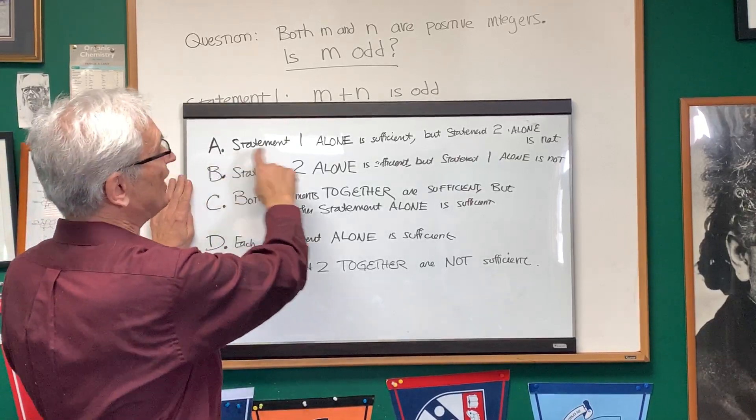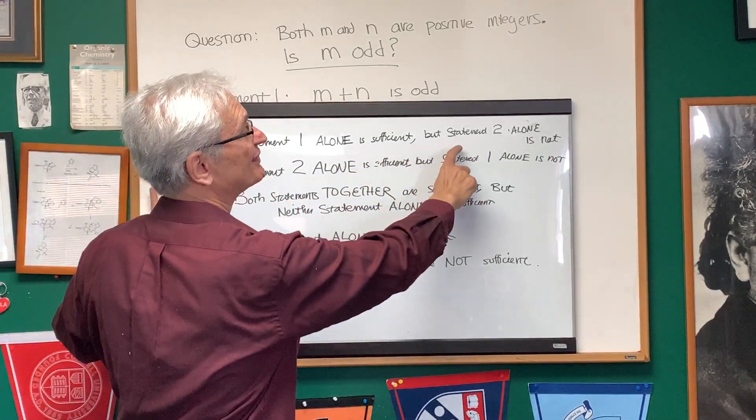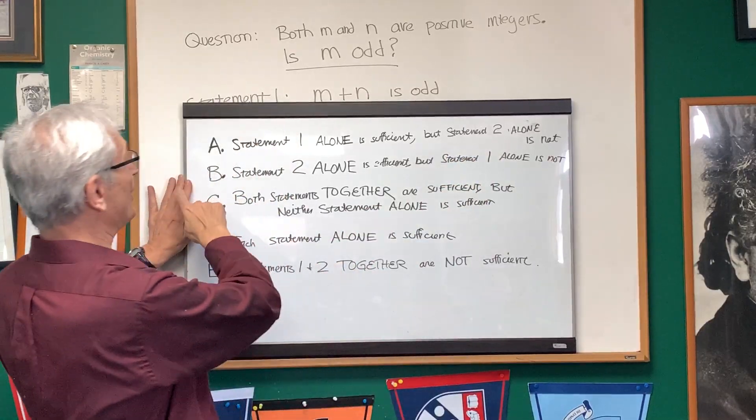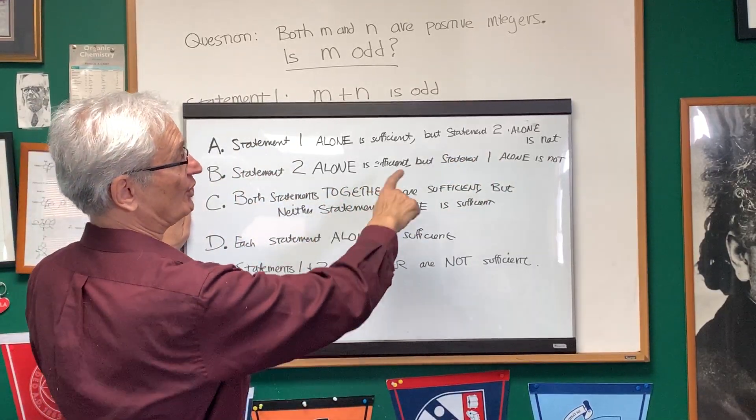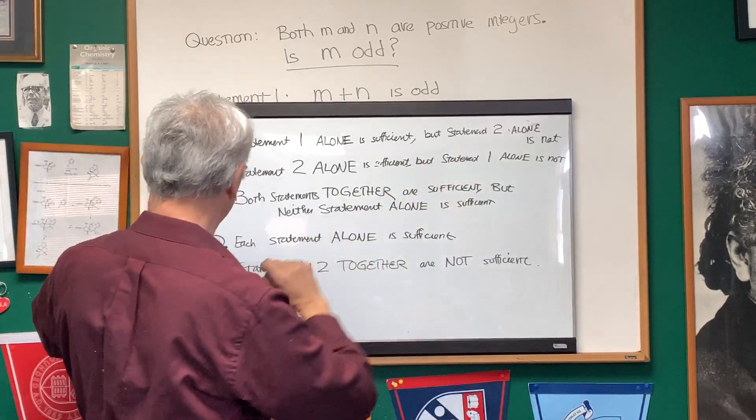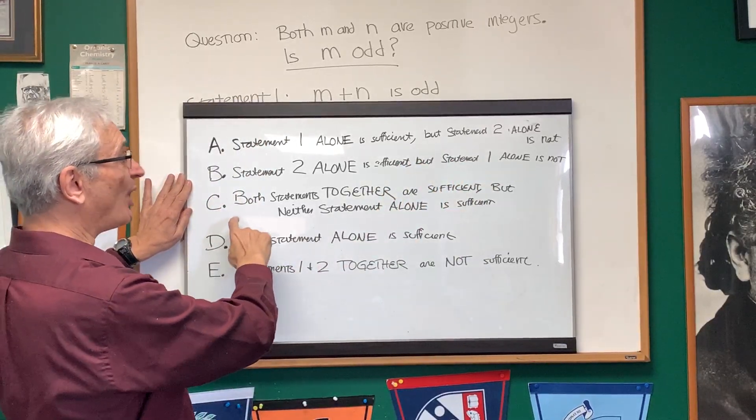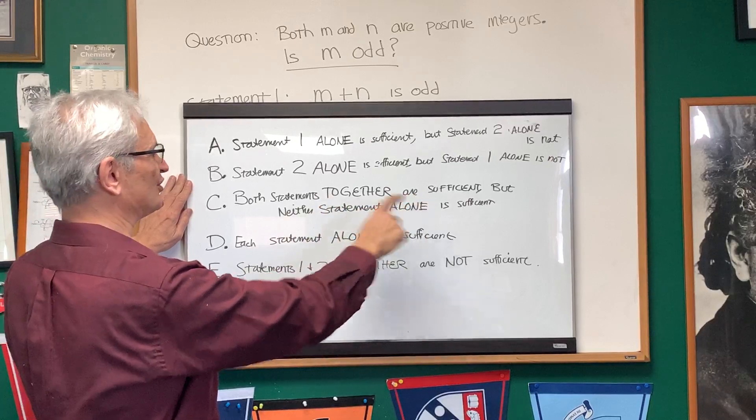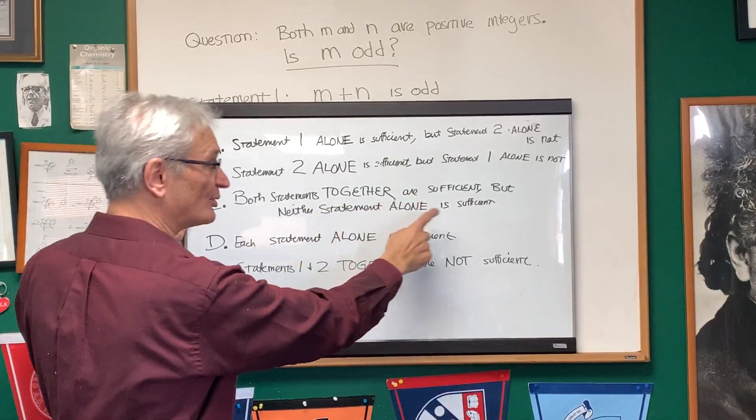Choice A: statement one alone is sufficient, but statement two alone is not. Choice B: statement two alone is sufficient to answer the question, but statement one alone is not. Choice C: both statements together are sufficient, but neither statement alone is sufficient.